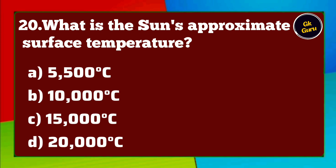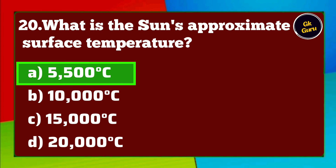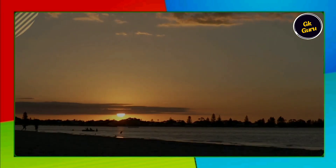What is the sun's approximate surface temperature? A. 5,500 degrees Celsius B. 10,000 degrees Celsius C. 15,000 degrees Celsius D. 20,000 degrees Celsius. Answer A. 5,500 degrees Celsius.